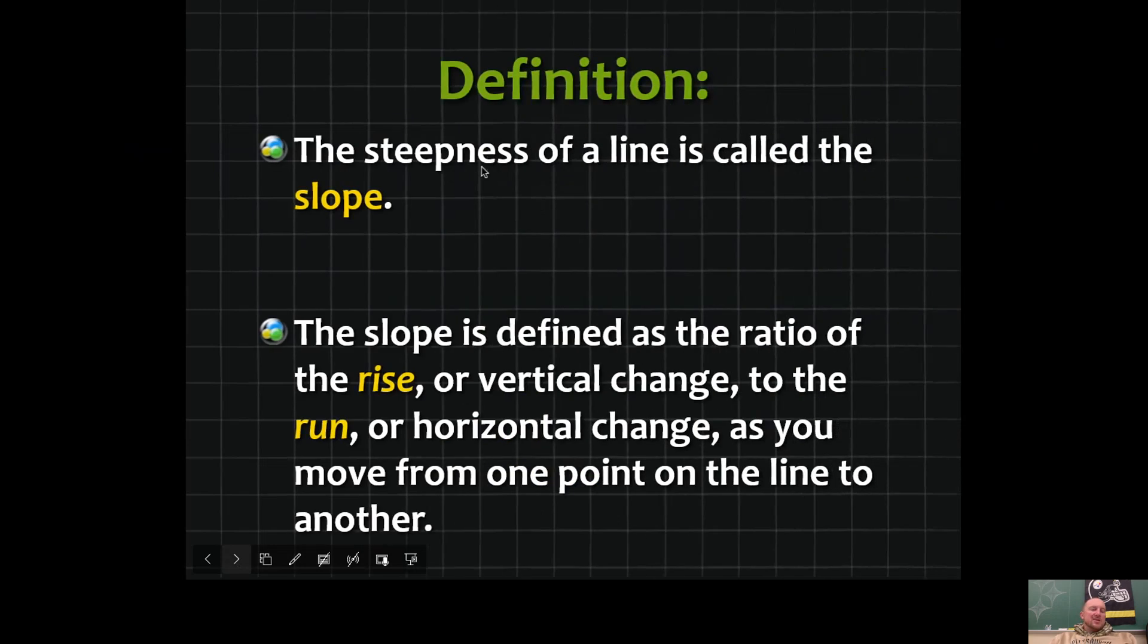Slope is the steepness of a line. It's defined as the ratio of the rise, that's the vertical change, to the run or the horizontal change, as you move from one point on a line to another. So slope just measures how steep something is—how steep is this hill, how steep is this roof, and so forth.